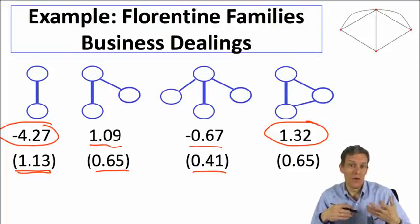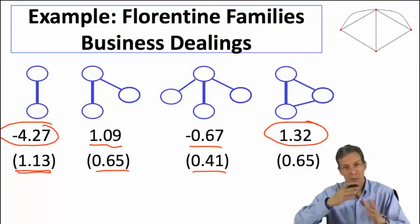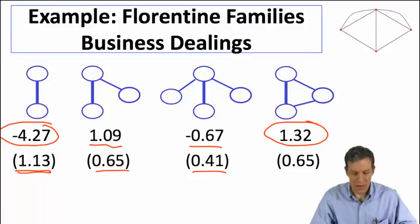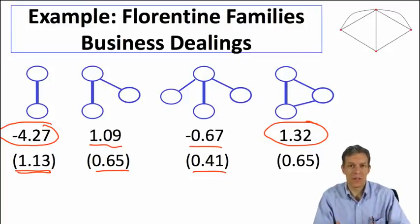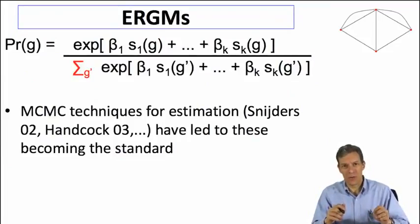There's something going on in terms of triads. We can actually have some theory for that that we'll talk about later in the course where it's possible that having business dealings with other families that are connected to the families you're dealing with helps you get leverage and make sure that people will actually behave. This gives us some of the idea of the power of exponential random graph models and why we might be using them. We can test for whether certain shapes are influencing and important in the network formation process.